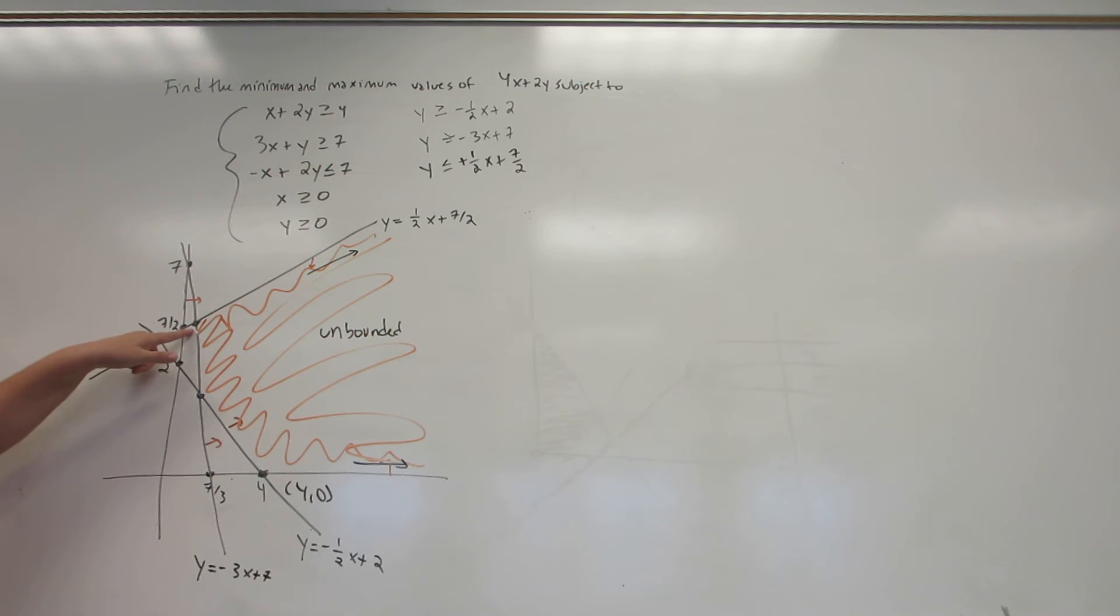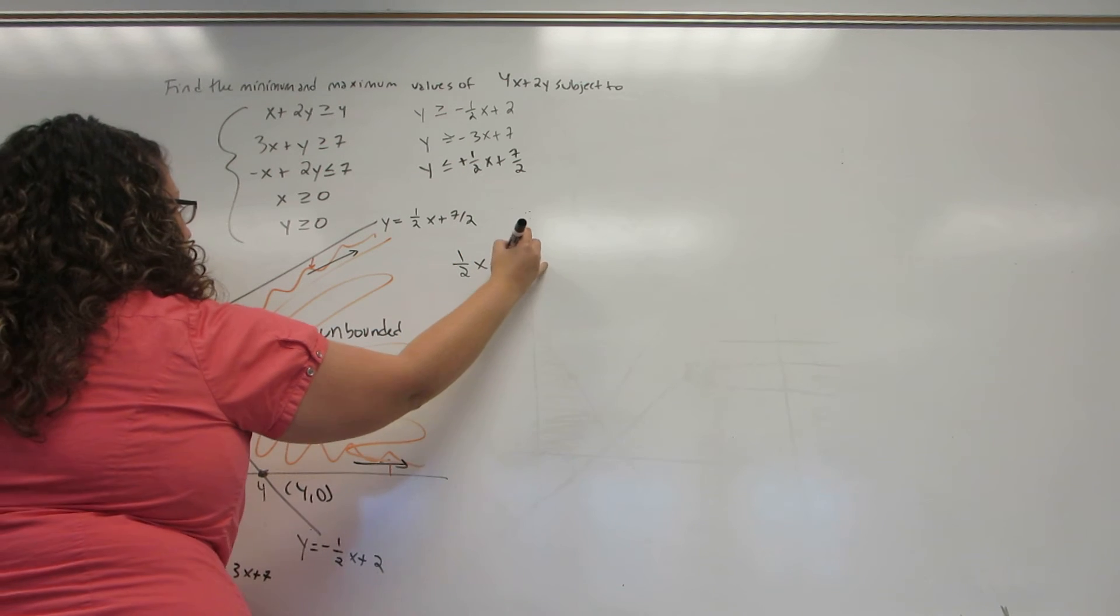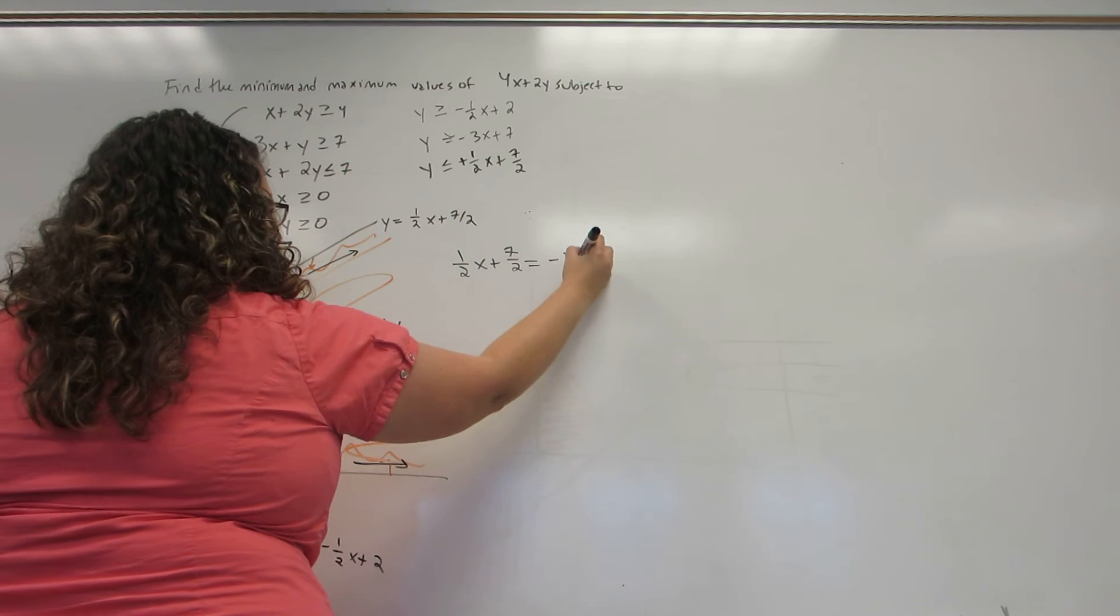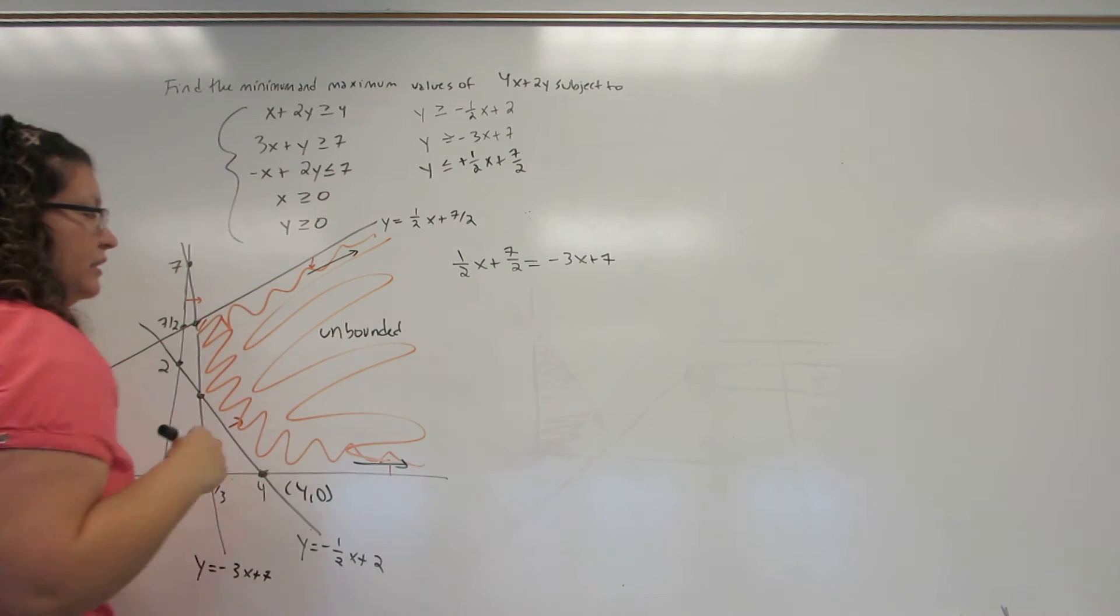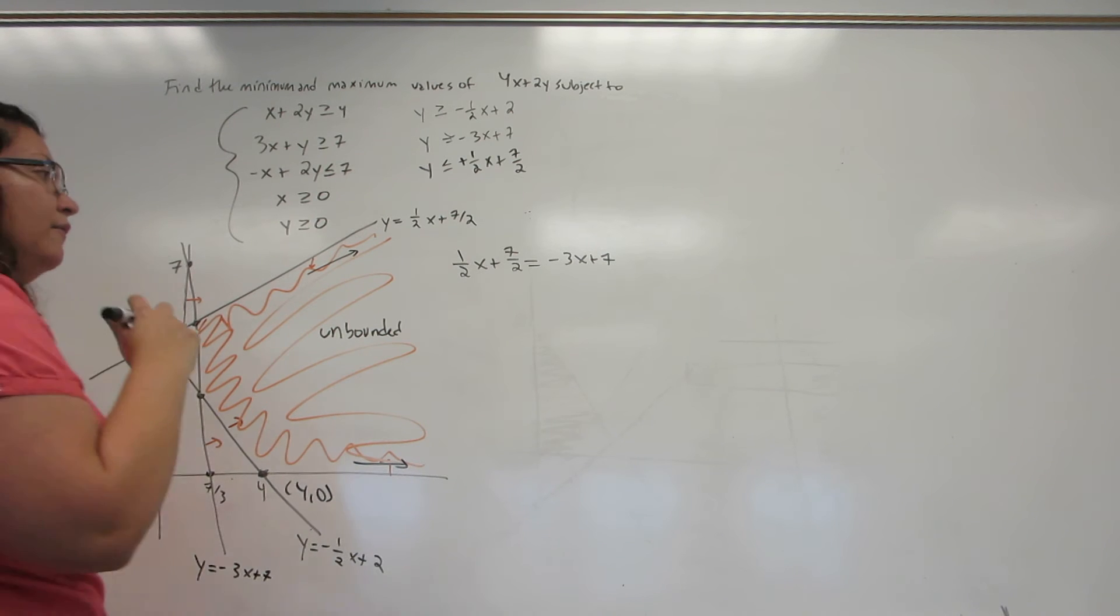So now let's go after this top one. Again, this is where the line a half X plus 7 halves intersects the line minus 3X plus 7. So I set them equal to each other in order to find the corner or vertex of the region.